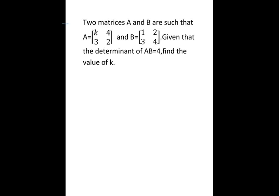Two matrices A and B are such that matrix A equals a 2 by 2 matrix K, 4, 3, 2, and B is also a 2 by 2 matrix 1, 2, 3, 4. Given that the determinant of AB is equal to 4, find the value of K.